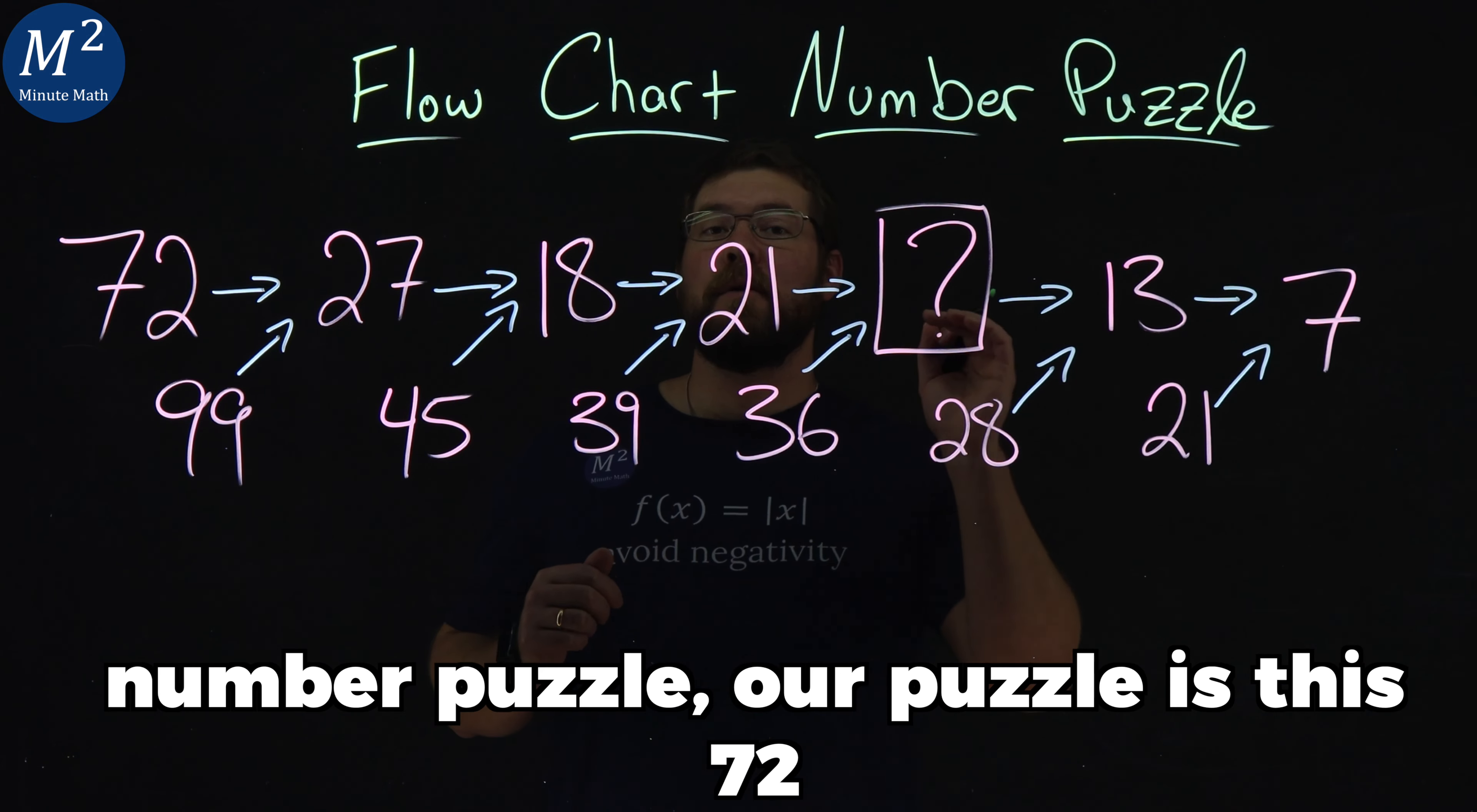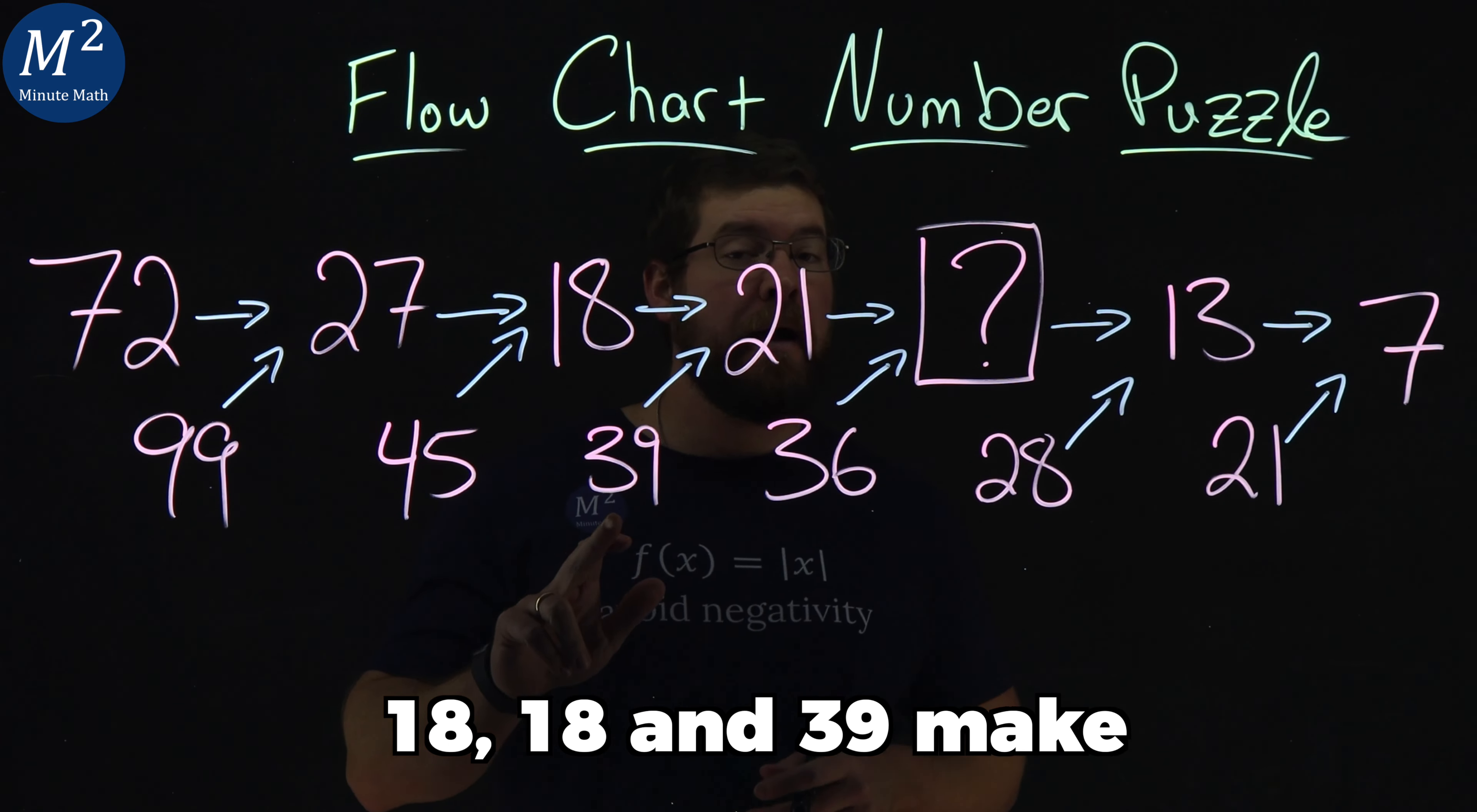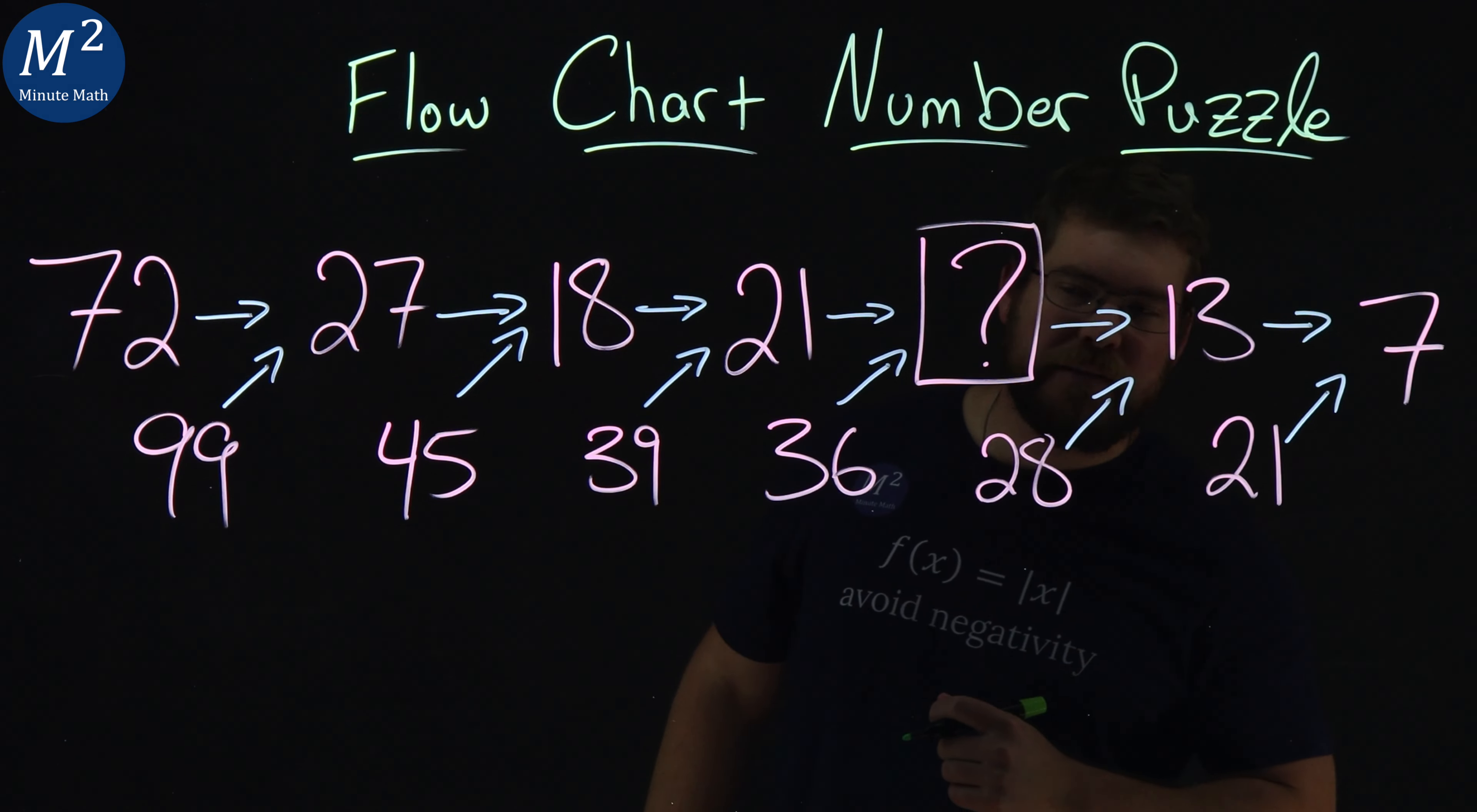We got the flow chart number puzzle. Our puzzle is this: 72 and 99 make 27, 27 and 45 make 18, 18 and 39 makes 21, 21 and 36 make we don't know. And then that number and 28 make 13, and 13 and 21 make 7.